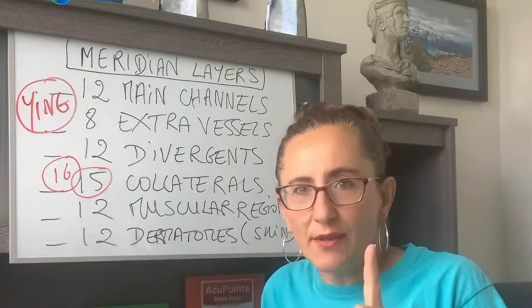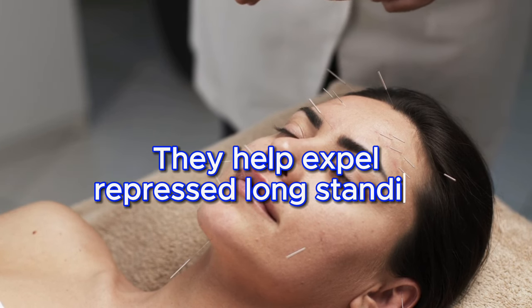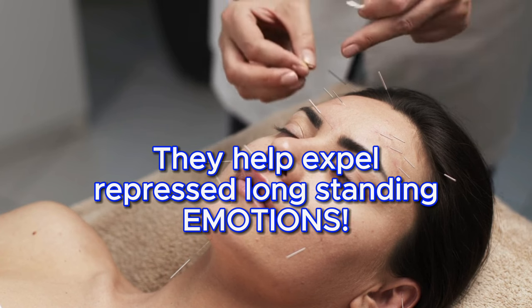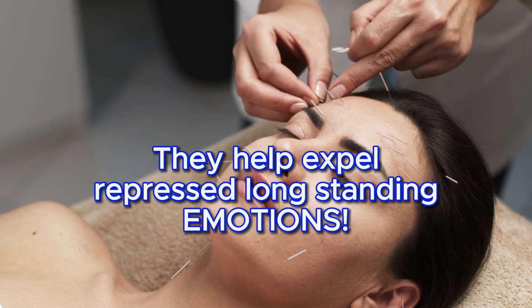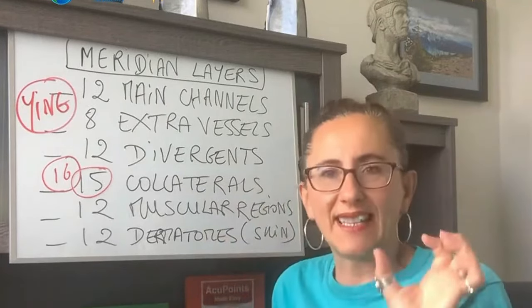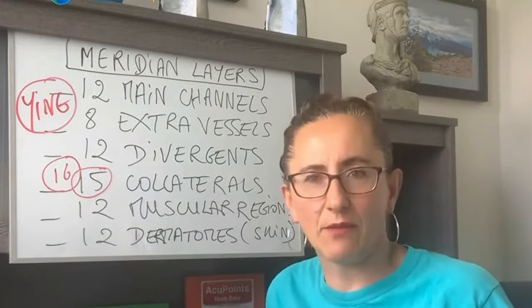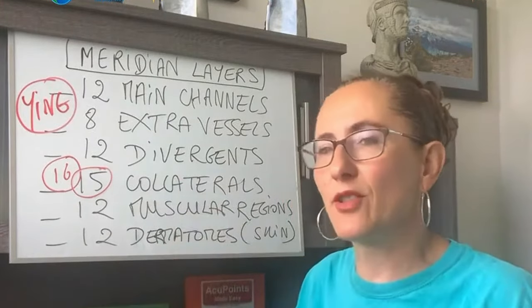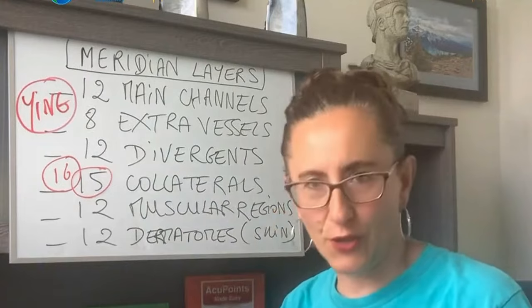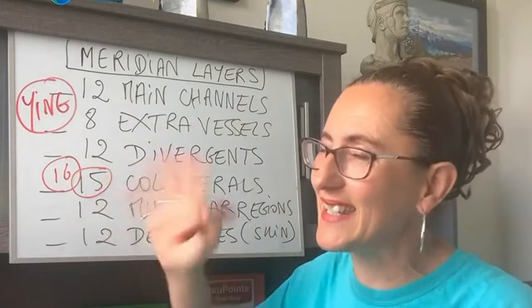They connect the external with the internal, and they help expel pathogens from the internal, pushing them out to the external. Emotionally, they help expel repressed, longstanding emotions we haven't dealt with. So a lot of times when you use a Luo connecting point, you may trigger people to cry or release emotions.